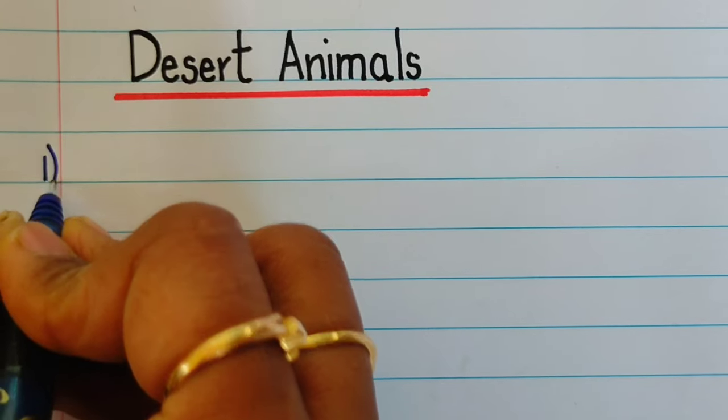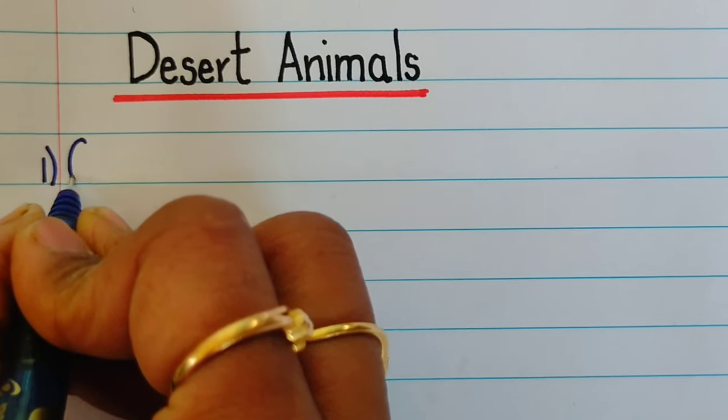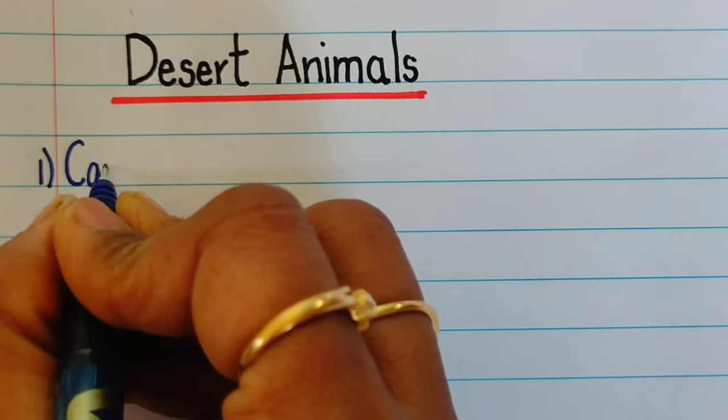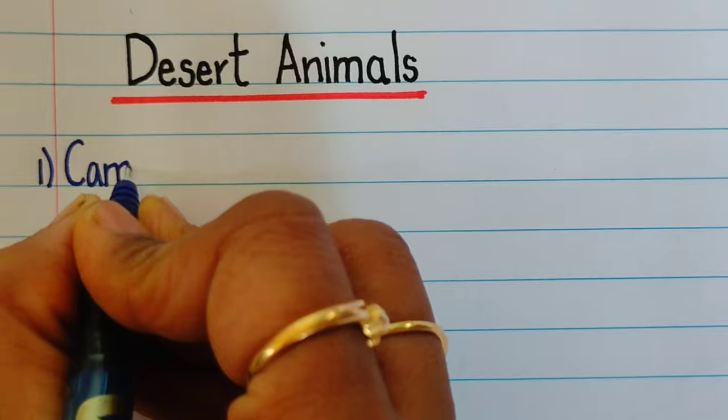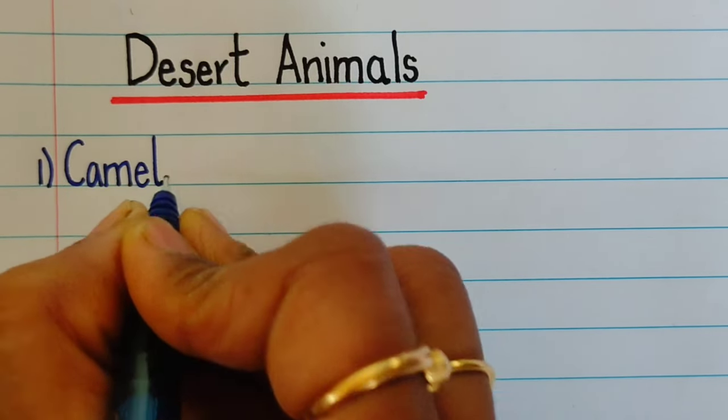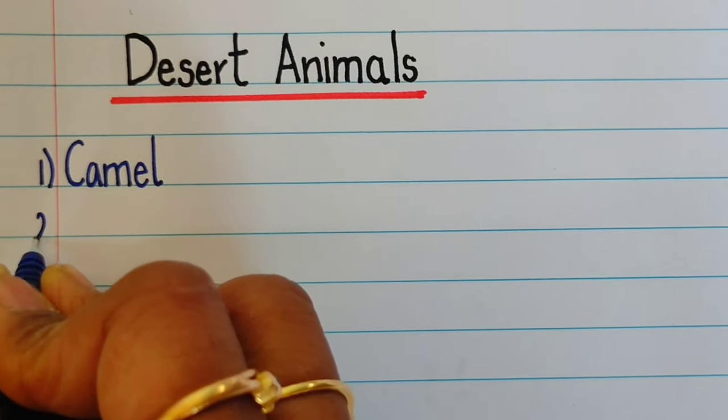Hi friends, in this video we will be writing the names of ten desert animals. The first one is camel.